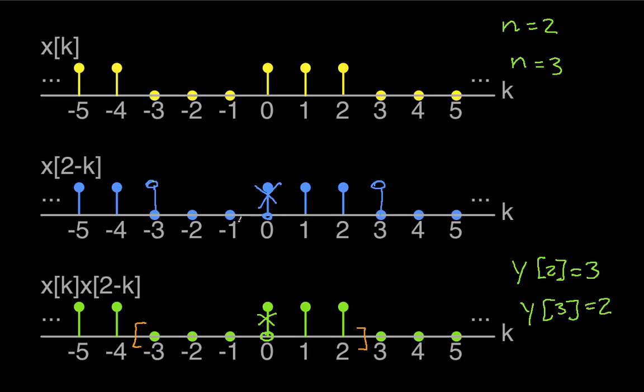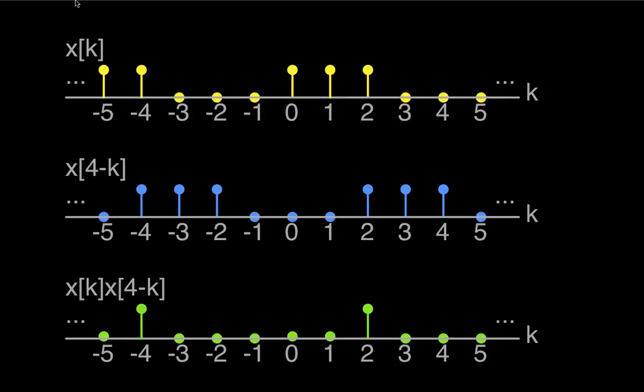And in a similar way, in fact, I think I've got this one drawn. This is the case where N is equal to 4. And in the case where N is equal to 4, I only have one value where the non-zero parts overlap. So again, choosing, I probably shouldn't do this, but it's kind of fun to choose different one period intervals to sum over.